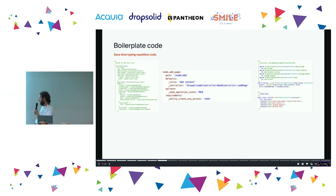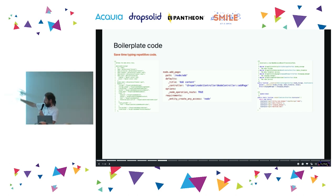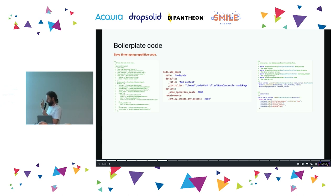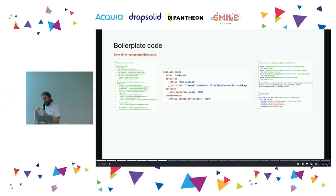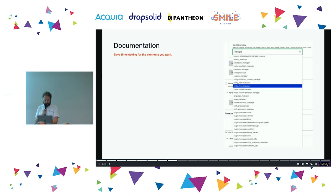Some examples of boilerplate code: entity type annotations, route declarations, and dependency injection. Dependency injection boilerplate is going to get reduced fairly soon because people like Longwave are making big efforts to have fancy Symfony auto-wiring in dependency injection — but there's still going to be some boilerplate, it's unavoidable.